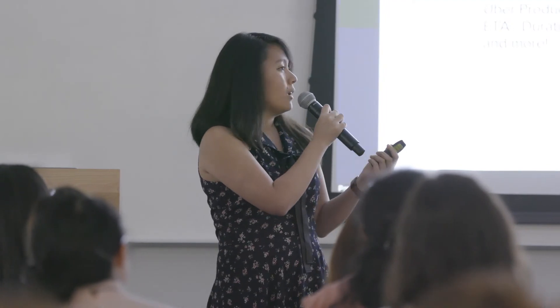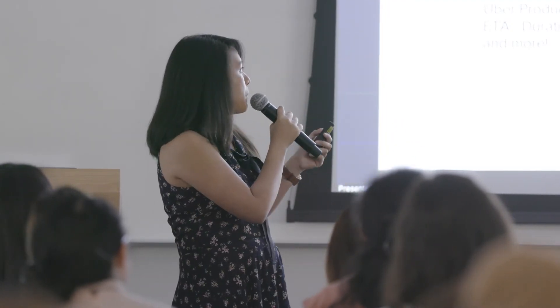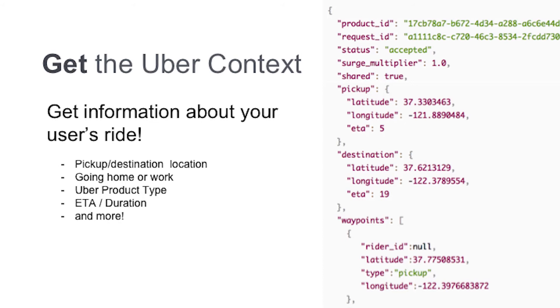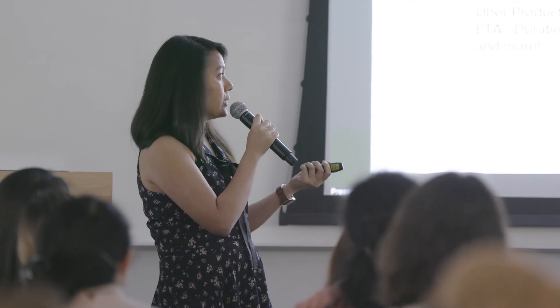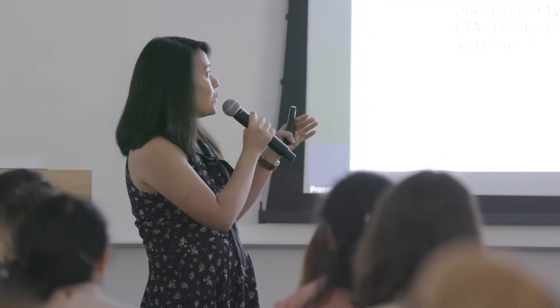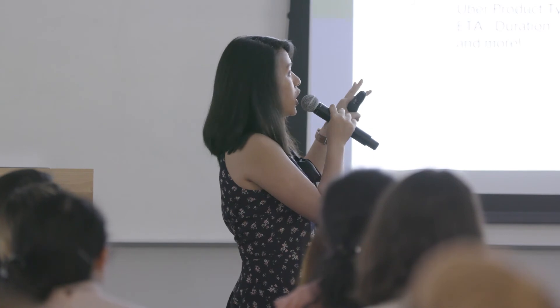So now that lucky user gets to see a more customized experience for their ride. Before we can do that, we'll have to get more information about their Uber context. This information can be something like where they're going — whether they're going from home or from work — where their current location is, their Uber product type, or whether they're using Uber Black or Uber Pool, etc. You can access this information by using that access token and turning it into context that you can then use in your app.